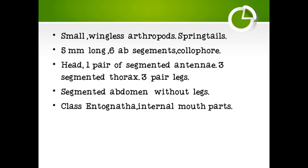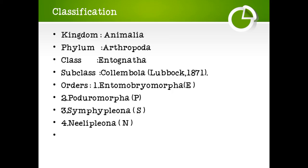Head with 1 pair of segmented antennae, 3-segmented thorax, and 3 pairs of legs are present. Segmented abdomen without legs. Class Entognatha, meaning internal mouth parts are present.